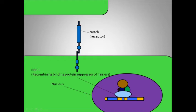Recombining binding protein suppressor of Hairless, or RBP-J, forms a transcription complex with CoR, which suppresses the expression of HES.